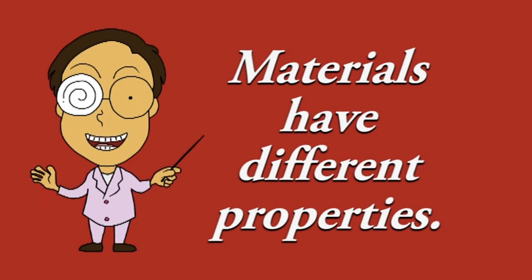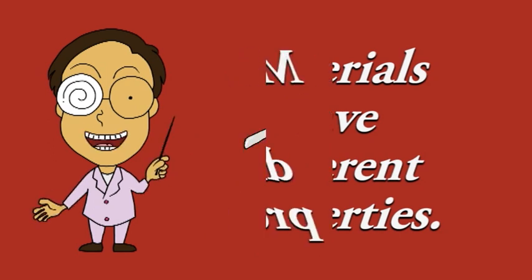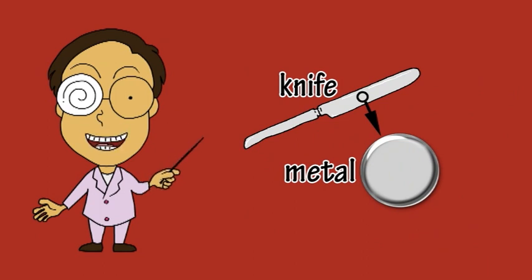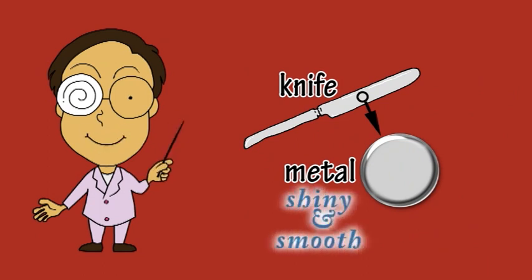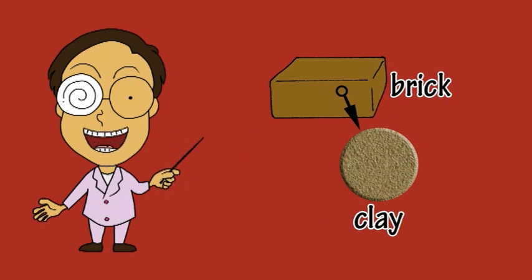Materials have different properties. For example, the metal this knife is made of is shiny and smooth, but the baked clay this brick is made of is dull and rough.